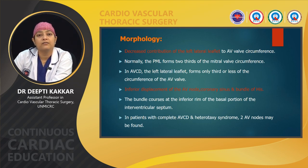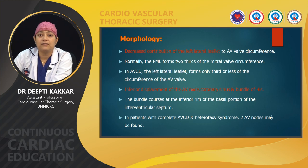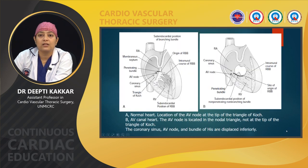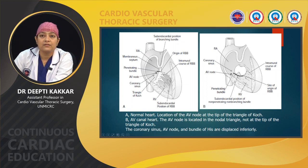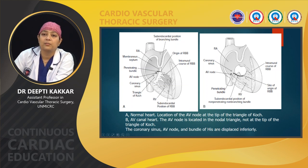In the normal heart, the AV node is located at the apex of the triangle of Koch. In AV canal defect, the AV node is located in the nodal triangle, which is not at the tip. The position of the AV node and bundle of His is critically important during surgical repair of the AV canal defect.